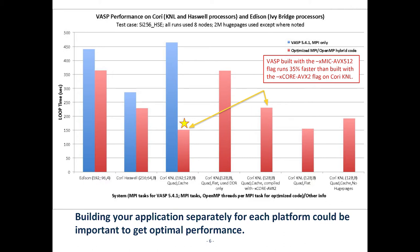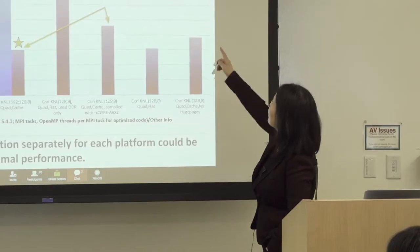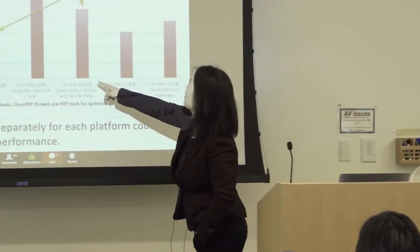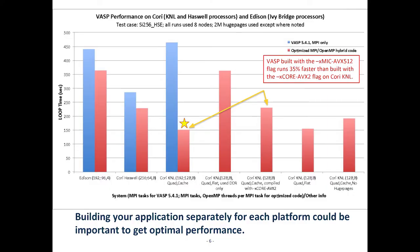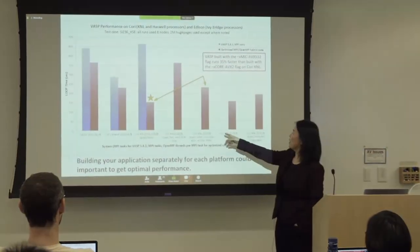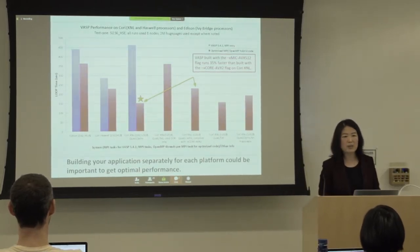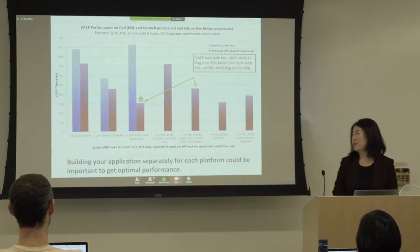The difference between the two red bars is just compilation: one enabled the KNL-specific flag — minus-X mic-AVX512 — and the other did not; it enabled the Haswell-specific flag instead. Basically this is a comparison of running a Haswell binary on KNL versus the KNL binary. You can see about a 35% performance difference. That's why we recommend you build separate binaries for each platform.